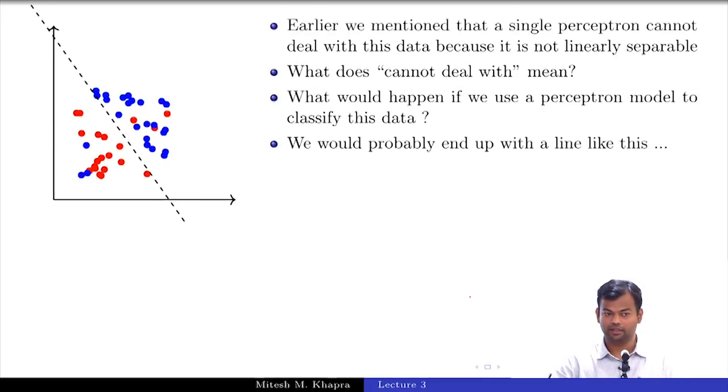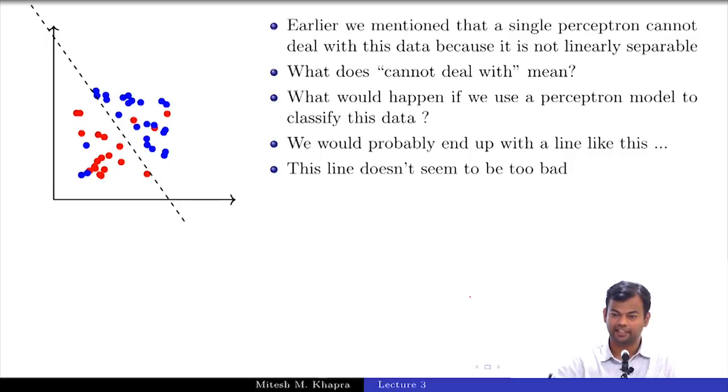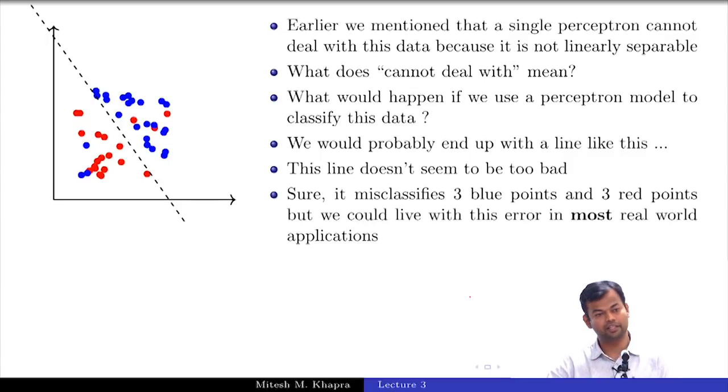Does this match what you had in mind roughly? Of course, there are many things possible, but it will basically pass through this. Now what is happening here? What is the problem? There are three blue points which are wrongly classified and three red points which are wrongly classified. But in most real world applications, we will find that this line is not too bad. We could live with this error. This is probably 3 out of 30 on both sides, which is roughly 10 percent error. Unless you are using it in some mission critical applications or in healthcare where it is a life and death situation, in most cases you could live with this.